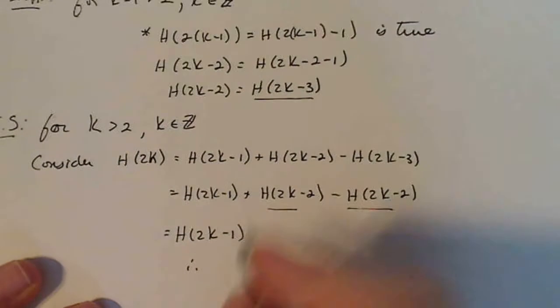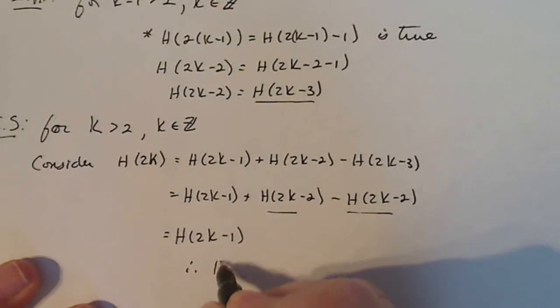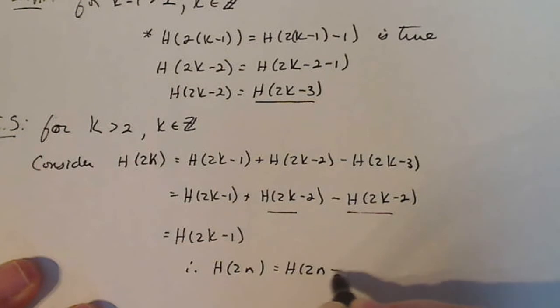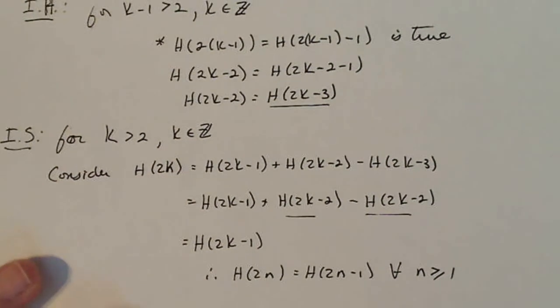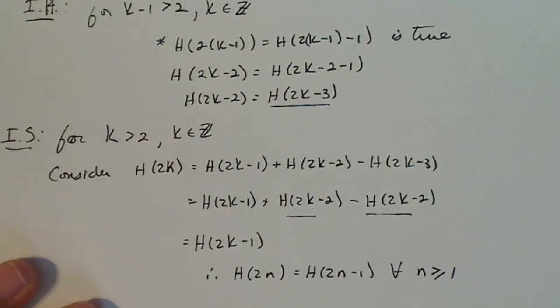Therefore, I can conclude that H(2n) = H(2n-1) for all n ≥ 1. Now, see, that's a slightly different kind of proof. I used the recurrence relationship a little different than what all the other videos did. So hopefully that will help you out.